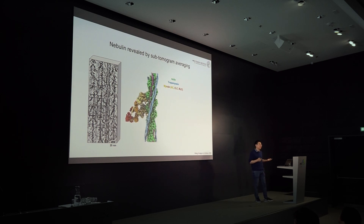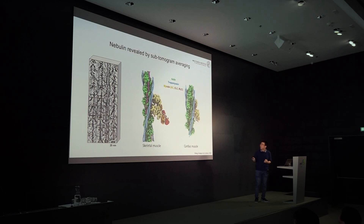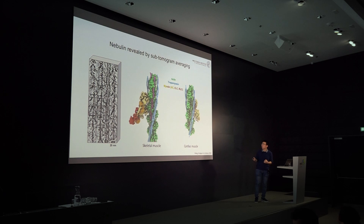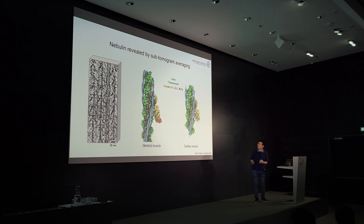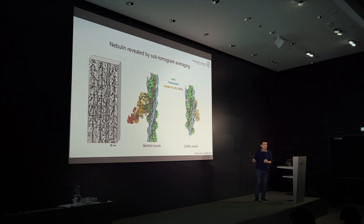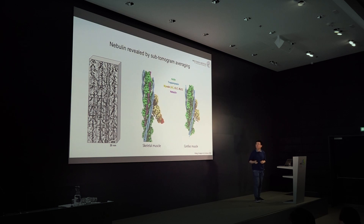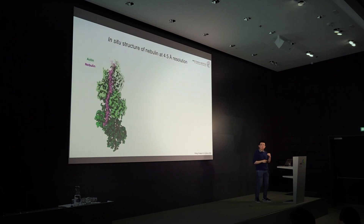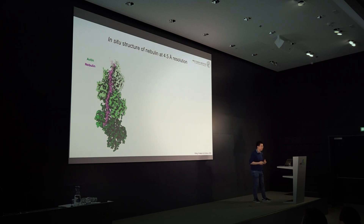To confirm nebulin's identity, we looked at cardiac muscle, where nebulin is naturally absent — like a natural mutant. Using the same workflow, we obtained the structure of the thin filament from cardiac muscle. From that structure, there is clearly a lack of the magenta density, confirming that indeed this is nebulin. This in-situ structure of nebulin, together with actin, was resolved to a resolution of 4.5 Angstroms.